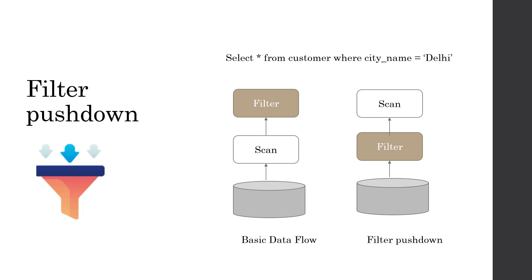By just reversing the order — first performing a filter for records pertaining to city name Delhi, and then doing the scan — we are improving performance by many folds. This is called filter push down, because the filter is pushed down to the lowest level first to reduce the data set. In Spark's distributed architecture, the costliest operation is the shuffle — data shuffling from one node to another. The best way to prevent that shuffle is to reduce the data on which we are operating.